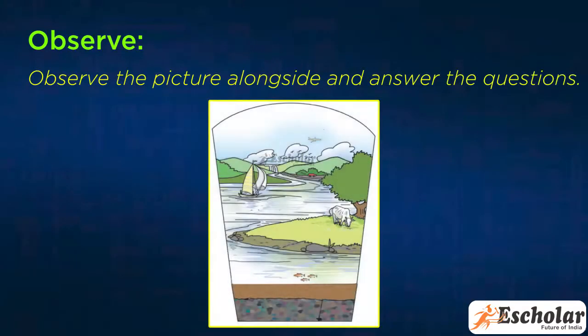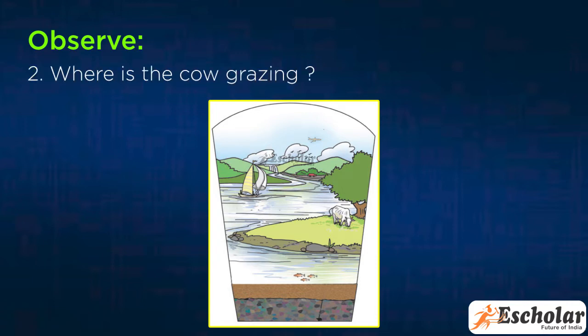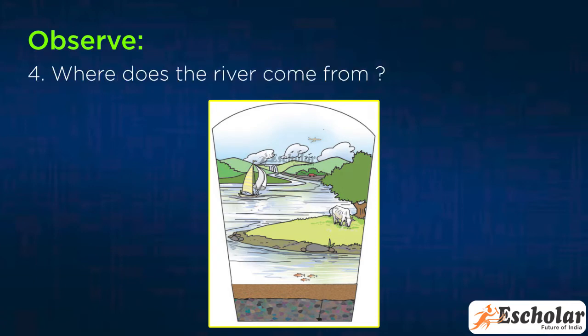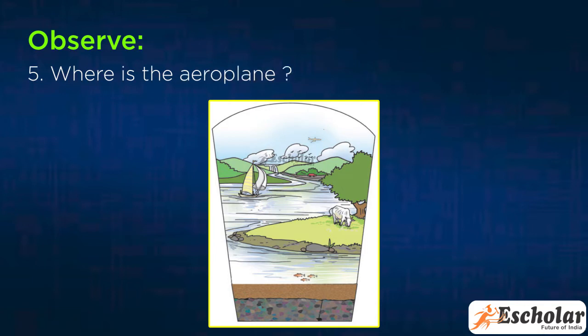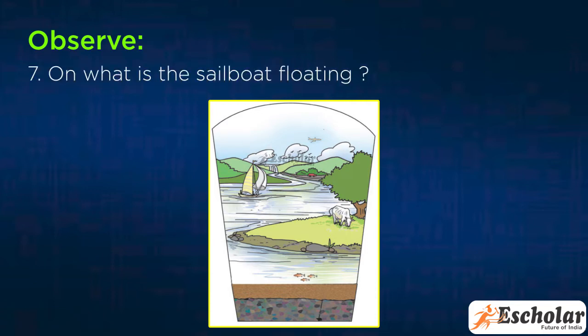Observe the picture alongside and answer the questions. First, where do we see the birds? Second, where is the cow grazing? Third, locate the trees and the road. Fourth, where does the river come from? How does it flow? Fifth, where is the aeroplane? Six, where are the fish seen? Seven, on what is the sailboat floating?